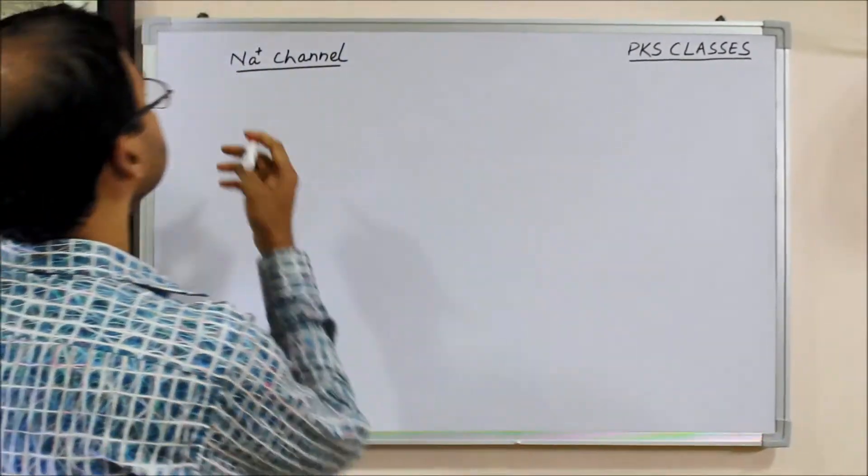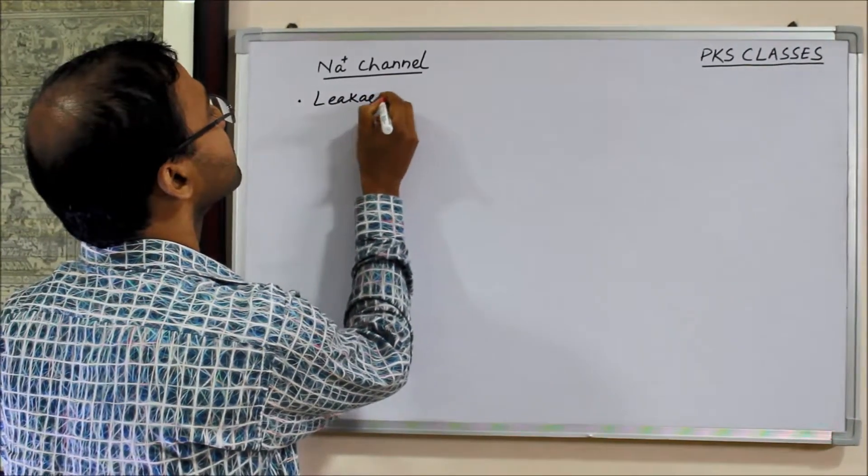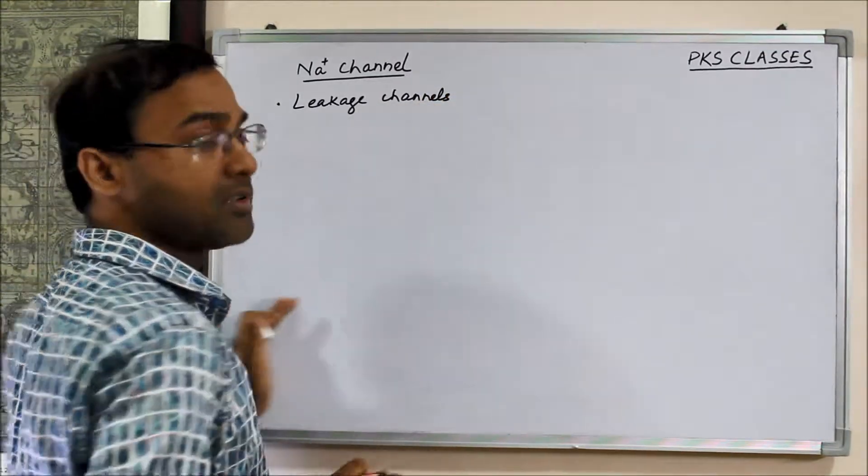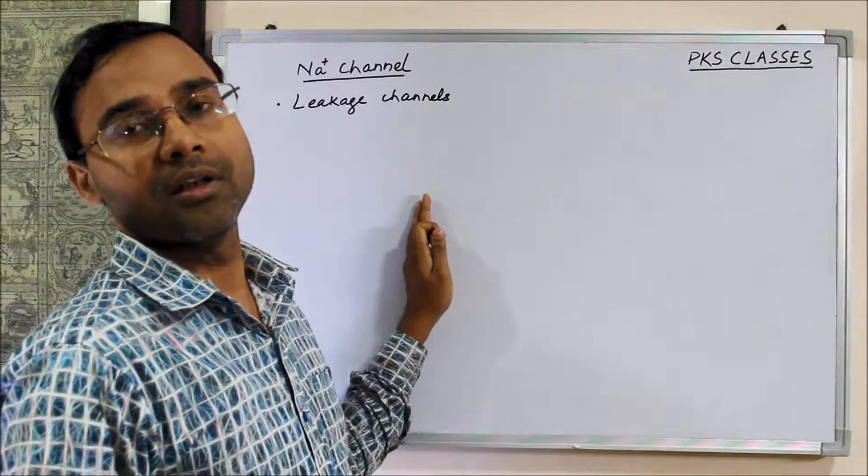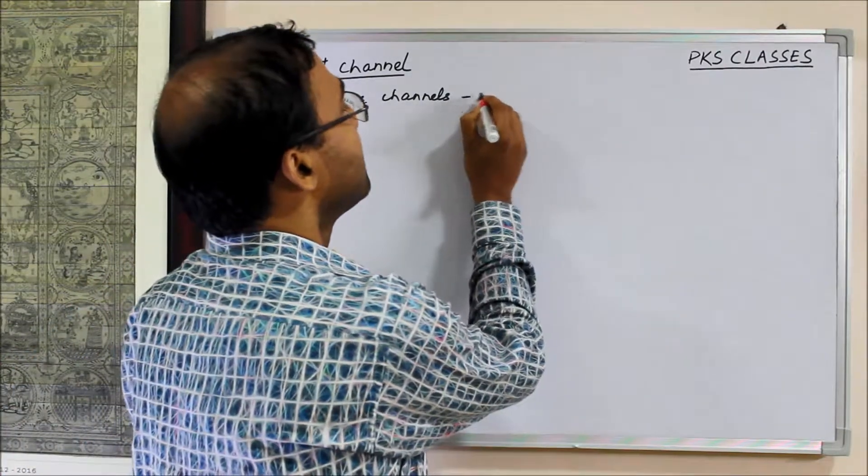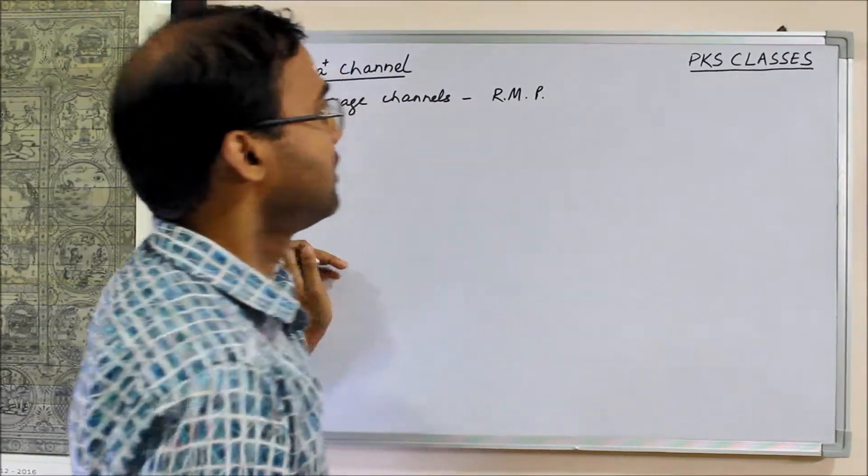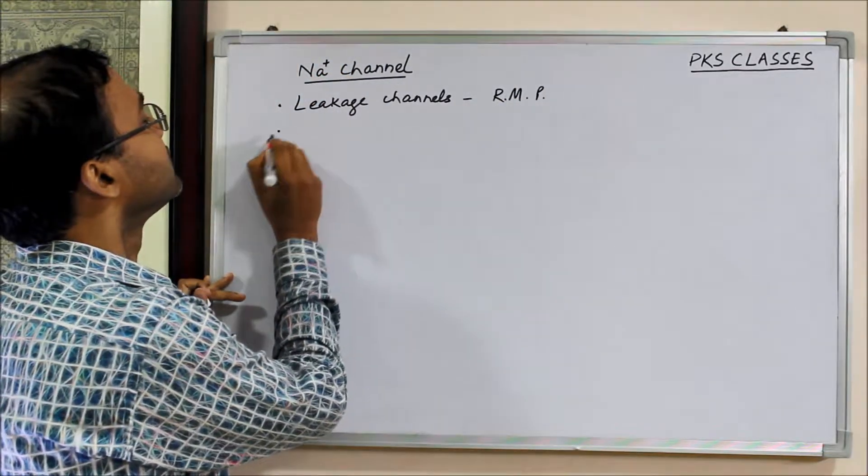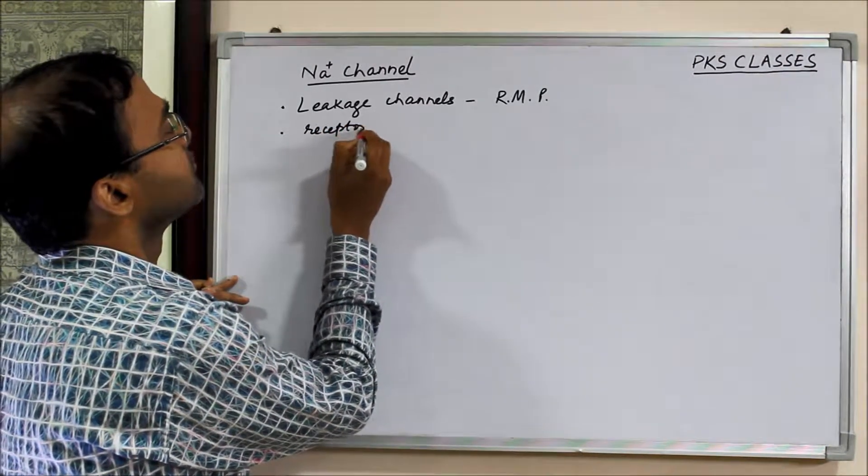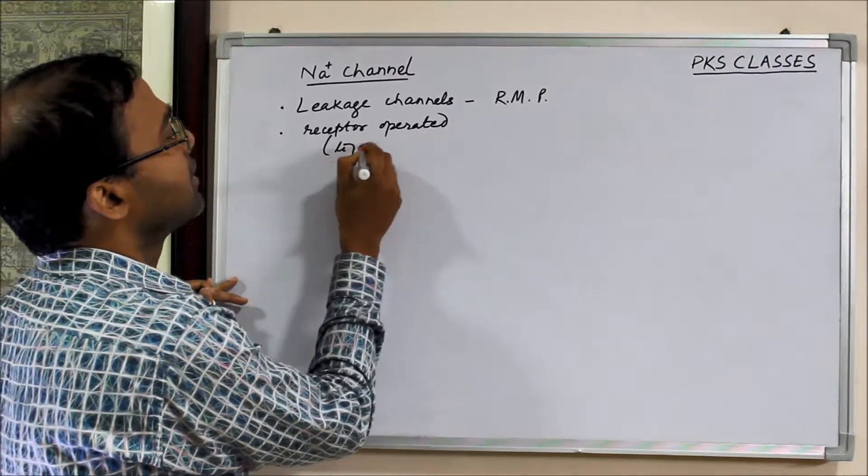First, leakage channels. Already we have discussed this in our earlier classes. Leakage channels are always open and they are there to maintain the resting membrane potential. Then receptor operated or we can say ligand gated.